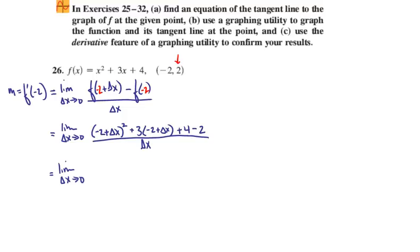We expand out negative 2 plus delta x quantity squared, which gives 4 minus 4 delta x plus delta x squared. We distribute the 3, giving us negative 6 plus 3 delta x. And then 4 minus 2 is 2, all over delta x.